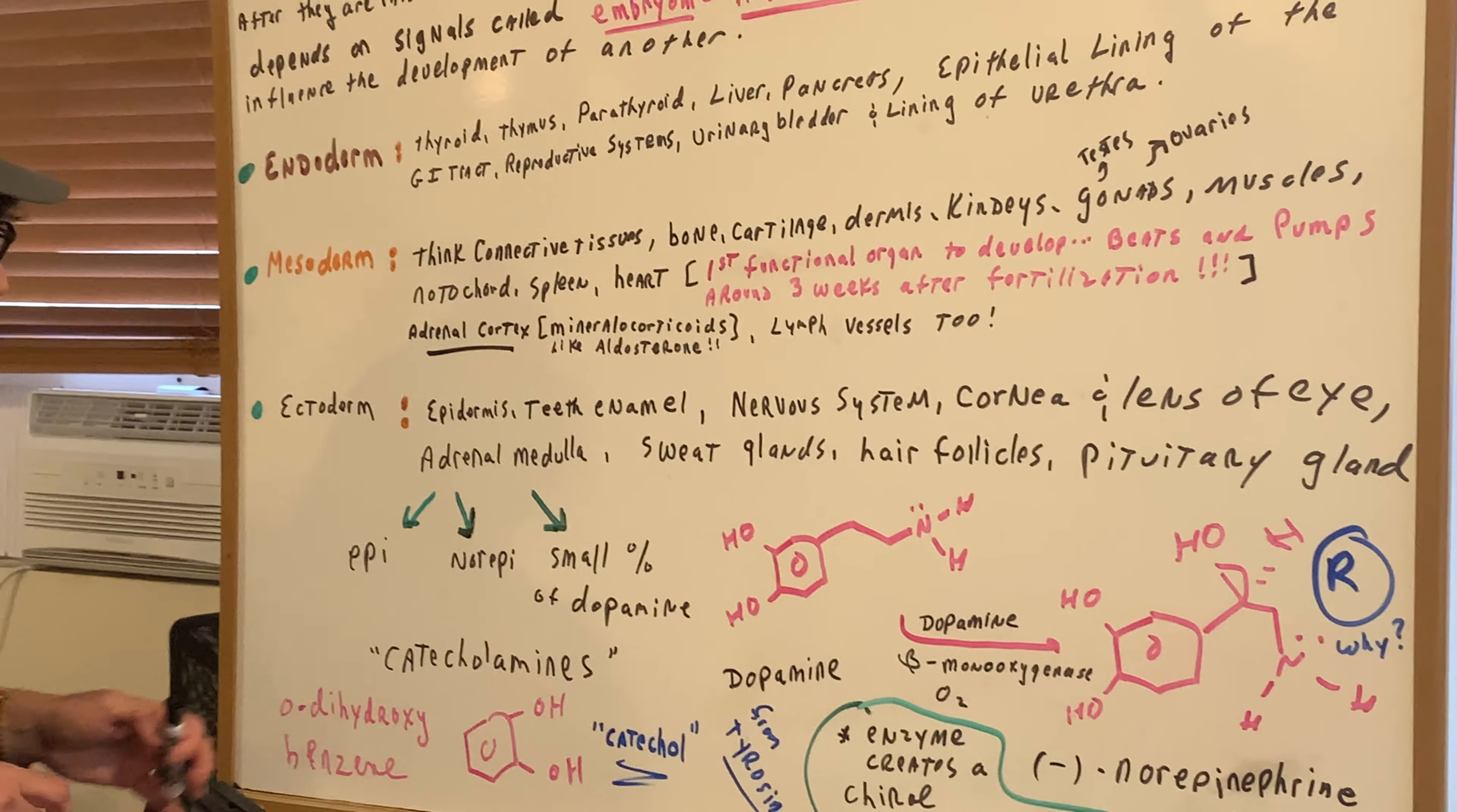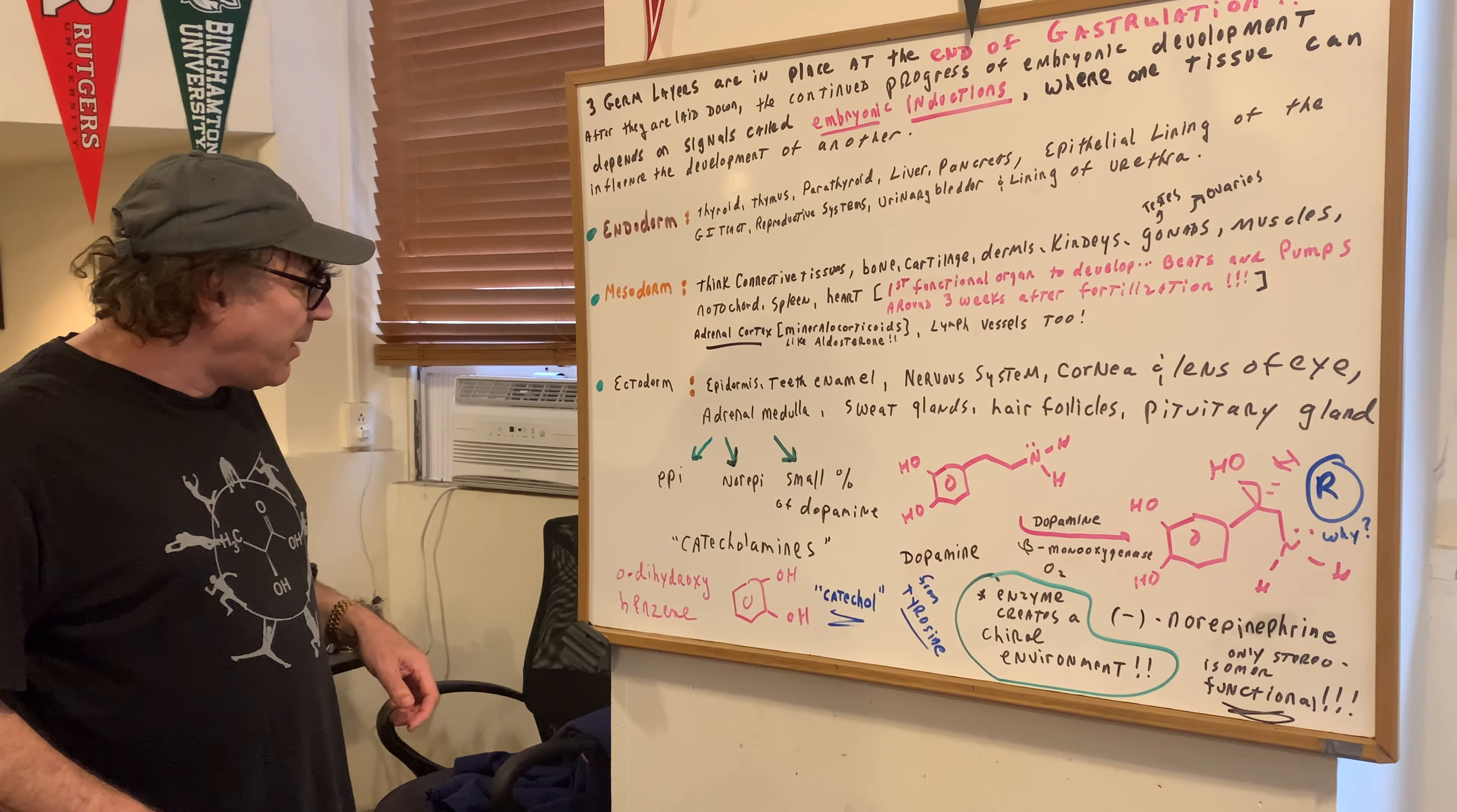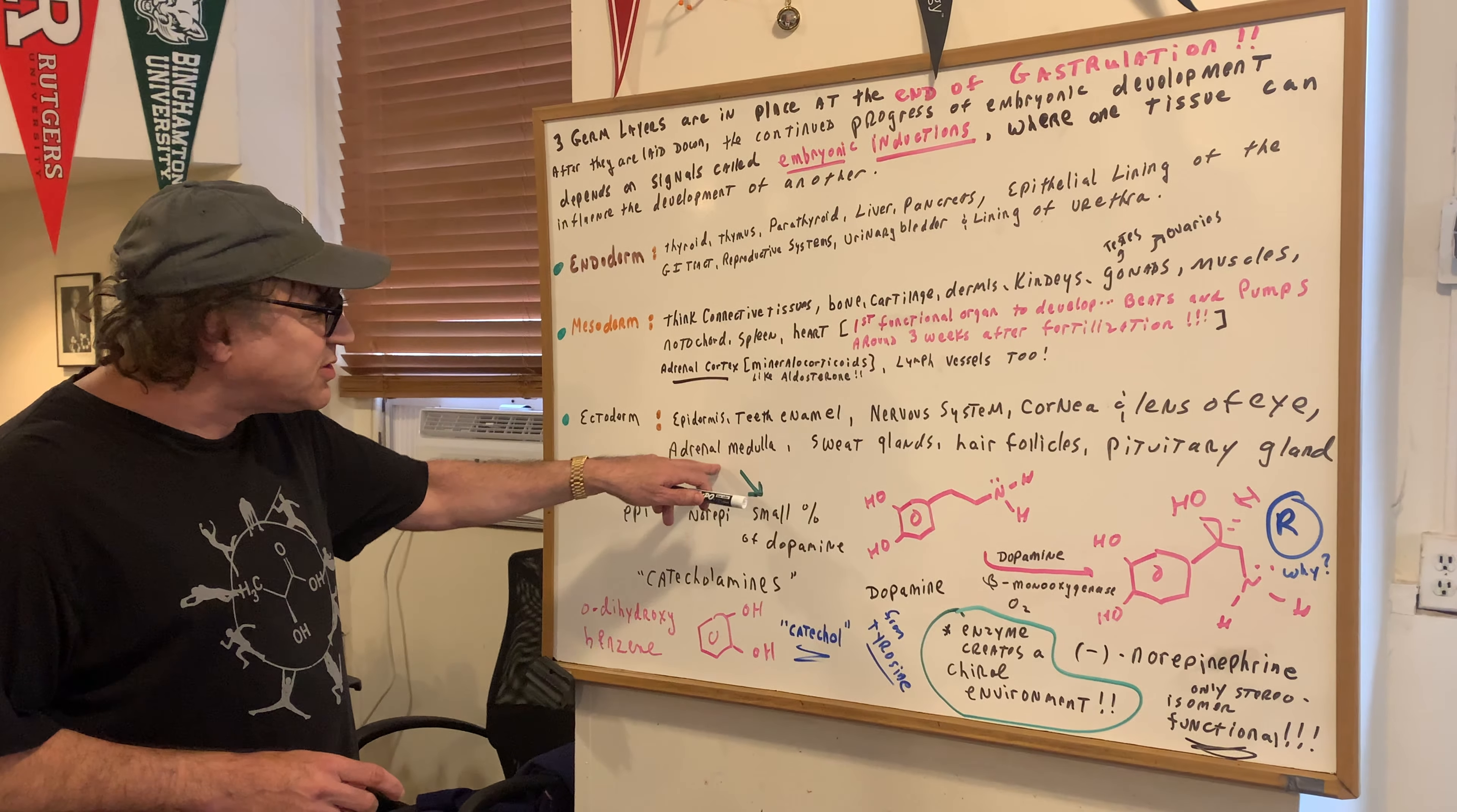Now, the adrenal medulla, if you remember, gives rise to what we call the catecholamines. Those catecholamines include epinephrine, norepinephrine, which are very similar in structure. Norepinephrine has no methyl. I had a shirt on the other day, it had norepinephrine on it, but I thought I had it on this one, but I didn't. So we have epinephrine, norepinephrine, and a small amount of dopamine. Most of the dopamine is made in an area of the brain. We'll go into that at another time. But also, a small percentage is in the adrenal medulla.